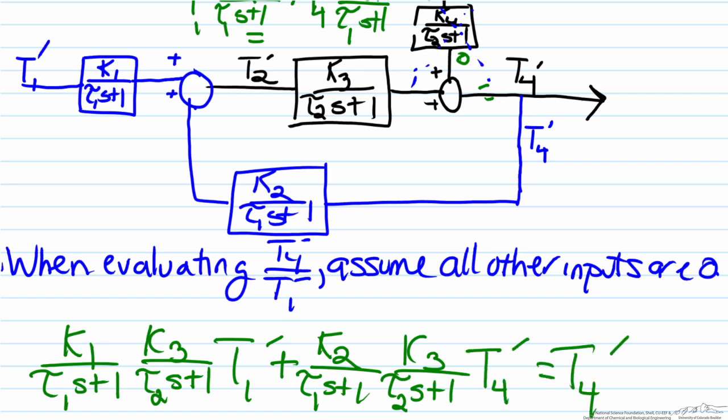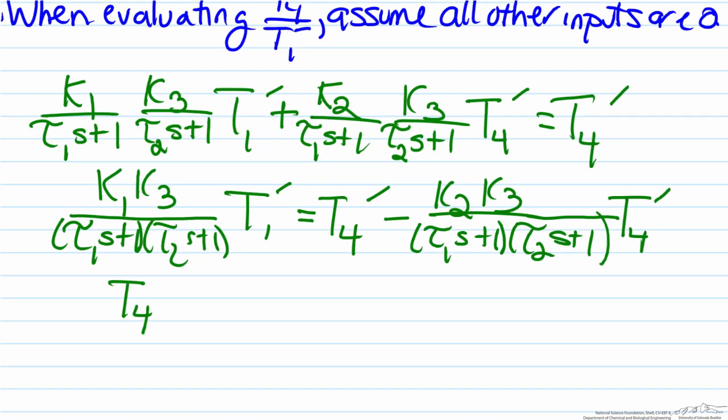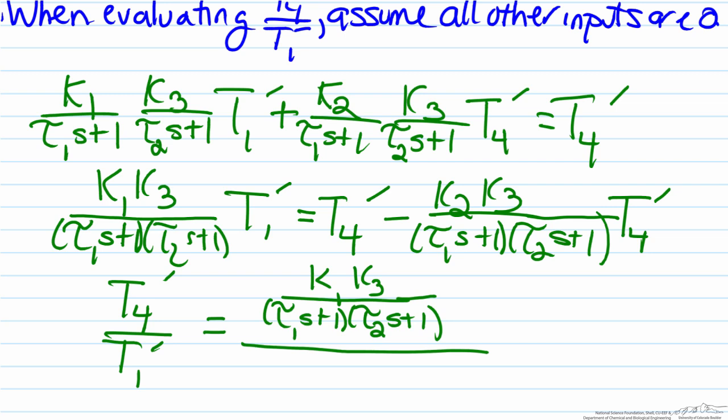So we will gather like terms together. We end up with T4 prime over T1 prime equals this term here, the term in front of the T1 prime, divided by, we factor out the T4 prime here, that's just a 1, minus this whole term in front of the second T4 prime term.